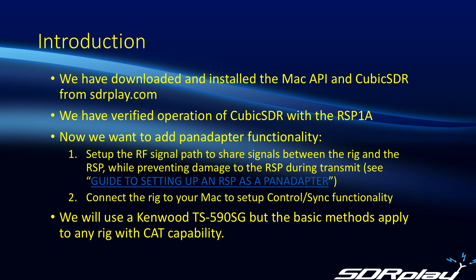I'm going to use a Kenwood TS-590SG, but the basic methods apply to any rig that has CAT capability. The reasons I'm using the Kenwood are several. Firstly, I have one on hand. Secondly, it's very easy to set up the RF signal sharing because of the DRV output on the back of the SG model. But if you don't have that capability — for example if you have the plain 590S — you can always use a TR switch like the MFJ-1708-B-SDR to share the antenna between the rig and the RSP. And the final reason I use it is because it has a USB output on the back, which just makes connecting it to the Mac so much easier.